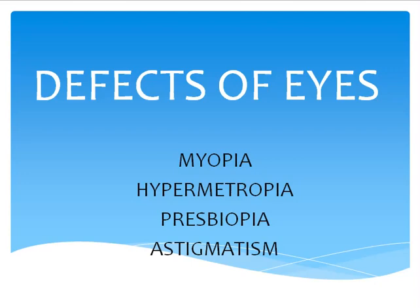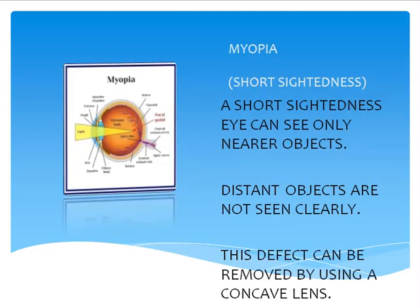In our earlier classes these have been studied. First of all, myopia is short-sightedness. A short-sighted eye can see only nearer objects. A person with myopia can see near objects properly, but there is a problem with distant objects. The corrective lens used is a concave lens.